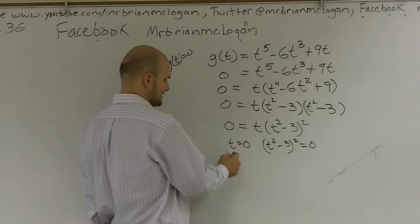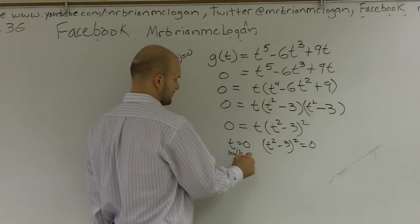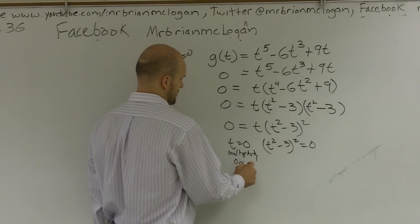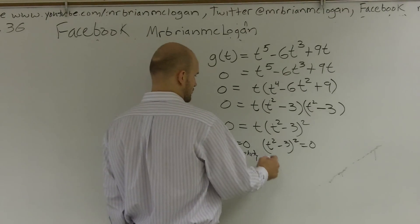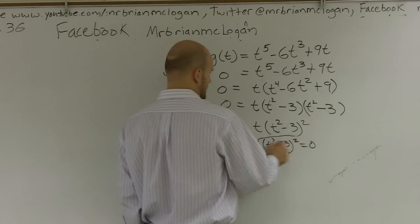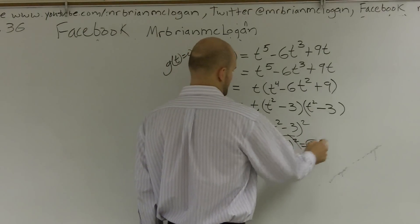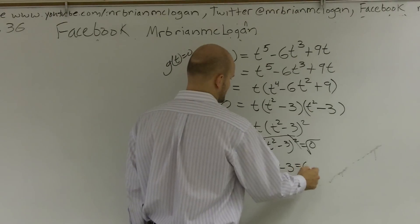t squared equals zero, that's pretty easy. And that's also to a multiplicity of one. Here, I got to square root to get rid of this square. There, and then I'm left with t squared minus three equals zero.